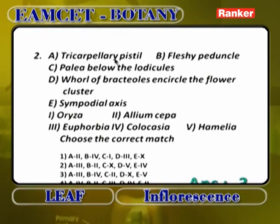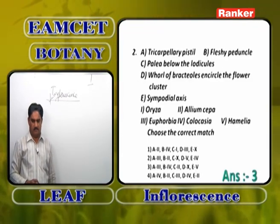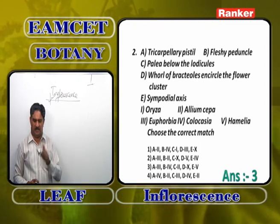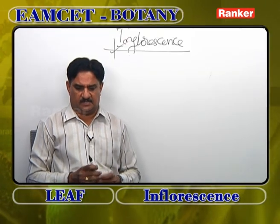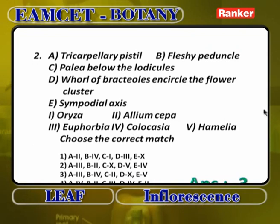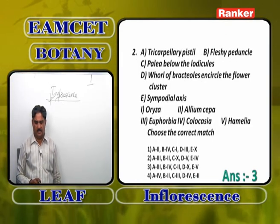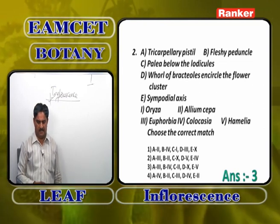Next question: match features to plants. Tricarpellary pistil (A) is found in euphorbia — the ovary is tricarpellary, syncarpous, trilocular. Fleshy peduncle (B) is colocasia (4) — peduncle is fleshy with upper male flowers, lower female flowers, and central neuter flowers. Palea below the lodicules (C) is allium cepa (2). Hole of bract-oles entering the flower cluster is found in helianthus and allium cepa. Sympodial axis (E) is found in heliotrope — monochasial helicoid cyme.